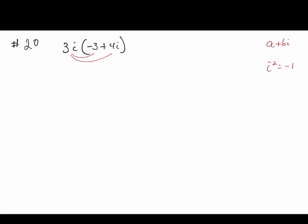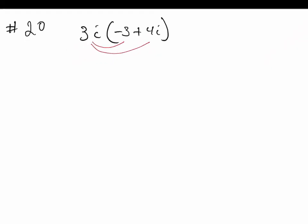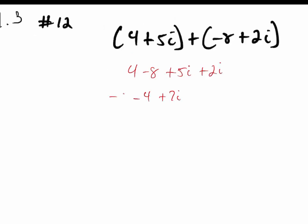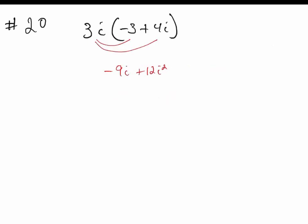So 3i times negative 3 is negative 9i. And 3i times 4i is 12i squared. Using the fact that i squared equals negative 1, we can rewrite it as negative 9i plus 12 times negative 1, which is negative 9i minus 12.